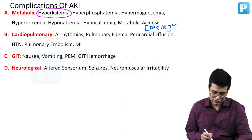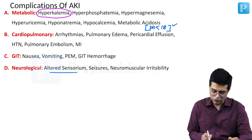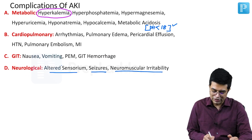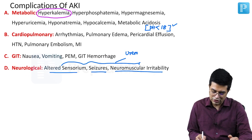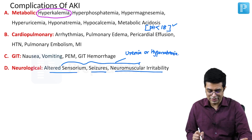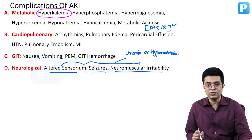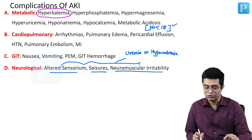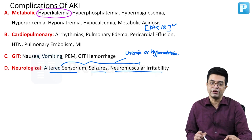Fourthly, we have neurological associations which are related to altered sensorium, seizures, and neuromuscular irritability. All these problems can be produced by either uremia or they can also be produced by hyponatremia. Remember that raised serum creatinine directly does not cause altered sensorium, but raised blood urea nitrogen can produce these CNS effects.